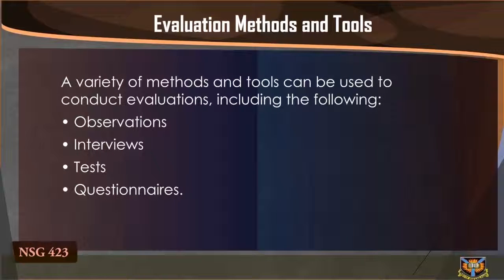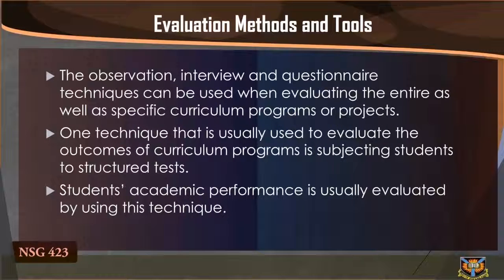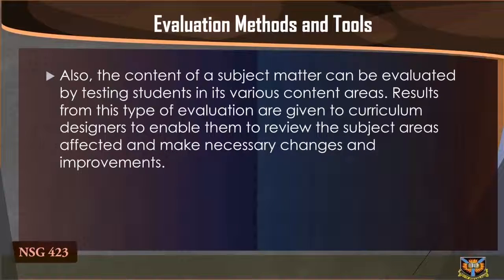Evaluation methods and tools. A variety of methods and tools can be used to conduct evaluations, including observations, interviews, tests, and questionnaires. The observation, interview, and questionnaire techniques can be used when evaluating the entire curriculum as well as specific curriculum programs or projects. One technique that is usually used to evaluate the outcome of curriculum programs is subjecting students to structured tests. Student academic performance is usually evaluated using this technique. The content of a subject matter can also be evaluated by testing students in its various content areas. Results from this type of evaluation are given to curriculum designers to enable them to review the subject area affected and make necessary changes and improvements.